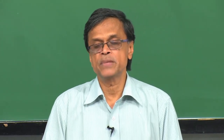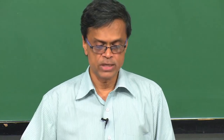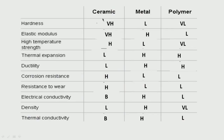This table I showed earlier compares ceramics, metals, and polymers. As you can see, hardness is very high for ceramics, low for metals, very low for polymers. Elastic modulus very high for ceramics, high for metals, low for polymers. High temperature strength: high, low, very low. Thermal expansion: ceramics do not expand at all whereas metals will have very high thermal expansion and polymers also can. Ductility is very very low for ceramics — we cannot make ductile shapes out of them. Corrosion resistance is very high for ceramics compared to metal or polymer.